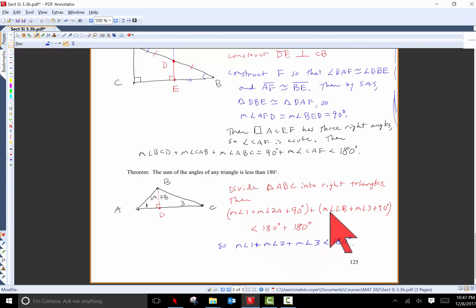But if I look at what this addition is, angle 1 plus 2A plus 2B plus 3 is exactly the angle sum 1 plus 2 plus 3. And so if I subtract 180 from both sides of this inequality, I get that the angle sum of ABC is less than 180. And that's the result that we wanted to get to.